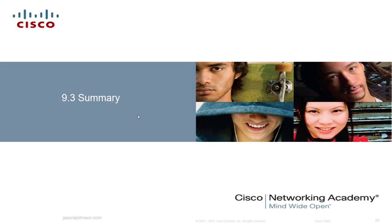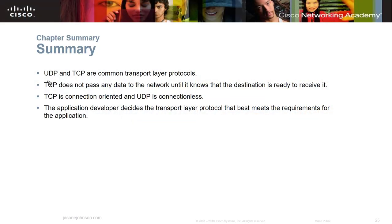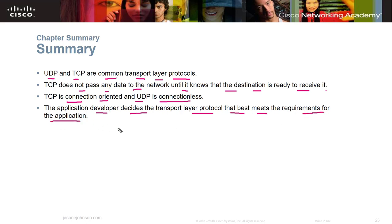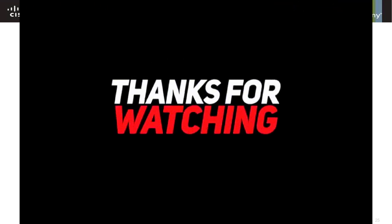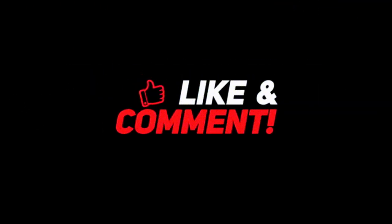In summary for Chapter 9: UDP and TCP are the two common transport layer protocols. TCP does not pass data to the network until it knows the destination is ready to receive it; UDP just forwards data on and doesn't care. TCP is connection-oriented and UDP is connectionless. The application developer decides which transport layer protocol best meets the requirements for their application. I hope this was helpful — give a thumbs up, leave comments, and have a great day.